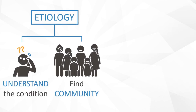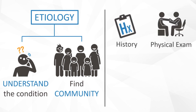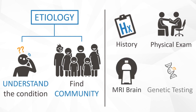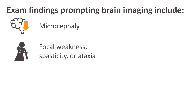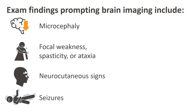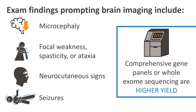Following the diagnosis of a developmental disability, an etiology will help families further understand the condition and find a support community. Frequently, a thorough history and physical examination will reveal the underlying etiology. In cases where this is less clear, a brain MRI or genetic testing is pursued. Physical exam findings that should prompt brain imaging include microcephaly, focal weakness, spasticity or ataxia, neurocutaneous signs, or a history of seizures. While historically serum metabolic testing was pursued, we have learned that comprehensive gene panels or whole exome sequencing are of higher yield.